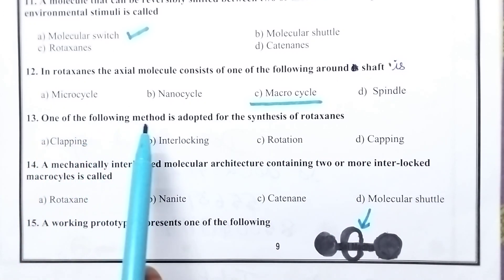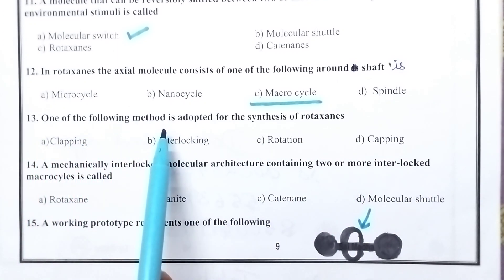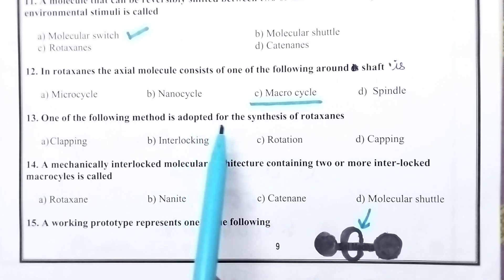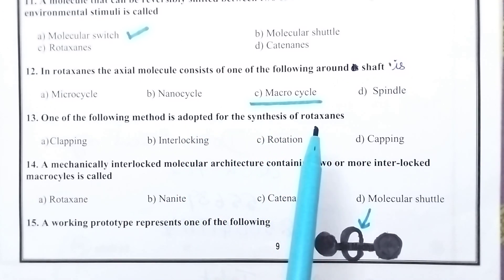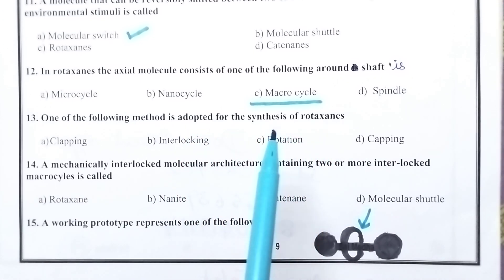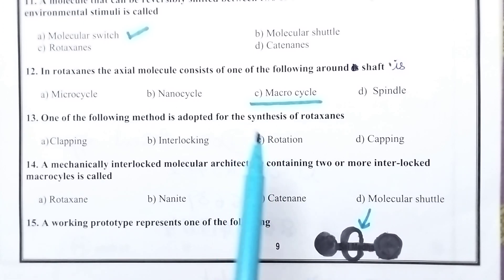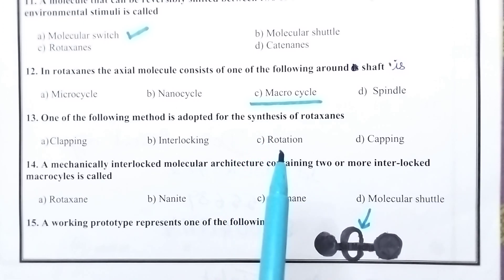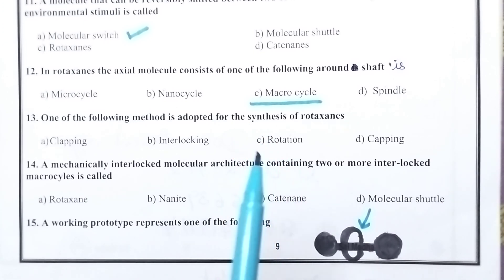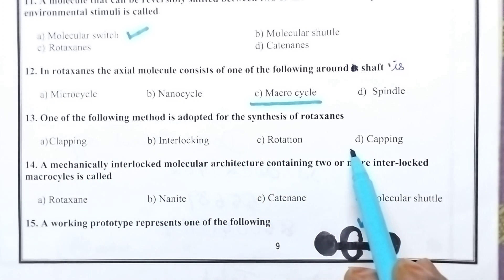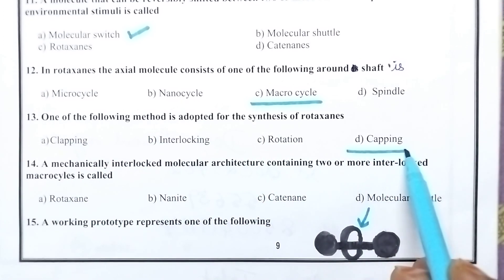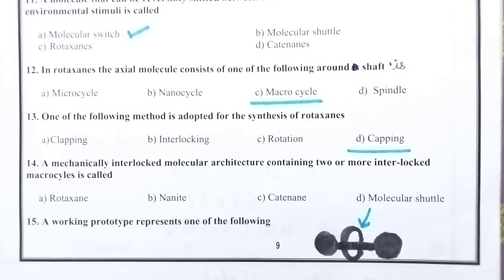One of the following methods is adopted for the synthesis of rotaxins. Rotaxins can be synthesized by three methods: namely capping, clipping, and slipping. In the given options, option D, that is capping, is the right answer.